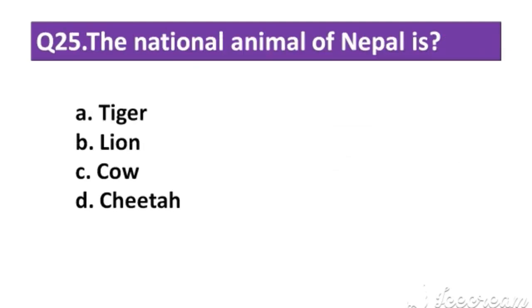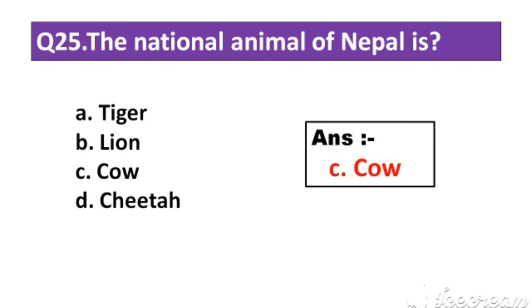Question number 25: What is the national animal of Nepal? Option A: Tiger. Option B: Lion. Option C: Cow. Option D: Cheetah. The right answer is Option C: Cow.